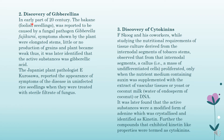Discovery of gibberellins: In the early part of the 20th century, the bakanae foolish seedling disease was reported to be caused by a fungal pathogen Gibberella fujikuroi. Symptoms shown by the plant were elongated stems, little or no production of grains, and the plant became weak. It was later identified that the active substance is gibberellic acid. This type of fungus infected the rice plant and helped in developing the foolish seedling — the plant appeared to be bearing seeds but was not actually bearing seeds, and as a result the plant became elongated. Gibberellins help in the enlargement of tissues and the increase in the internodal region, thus helping in the elongation of the shoot system. Whenever gibberellins are produced in a higher quantity, the shoot system becomes elongated very rapidly.